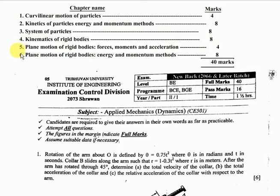Question number five is about plane motion of rigid bodies - forces, moments, and acceleration - worth 4 marks from chapter six. Plane motion of rigid bodies using energy and momentum methods is also 4 marks. This makes up part of the 40 marks total.